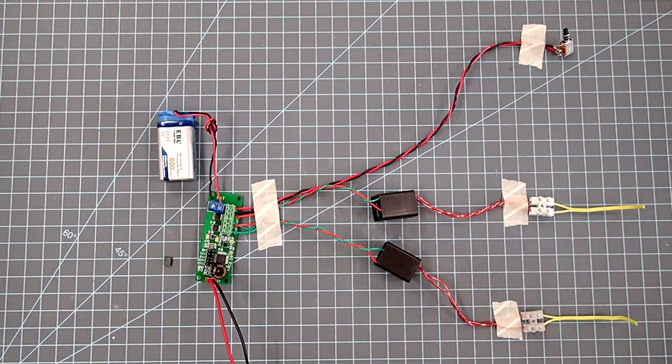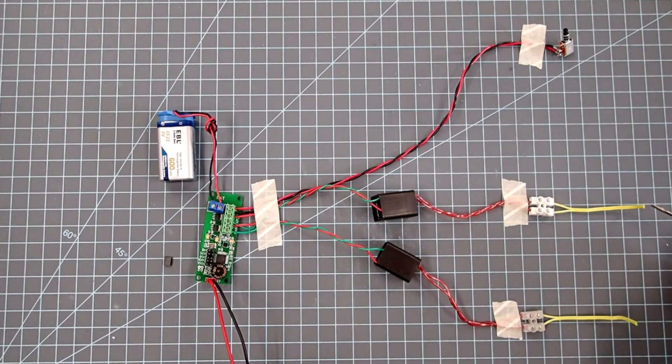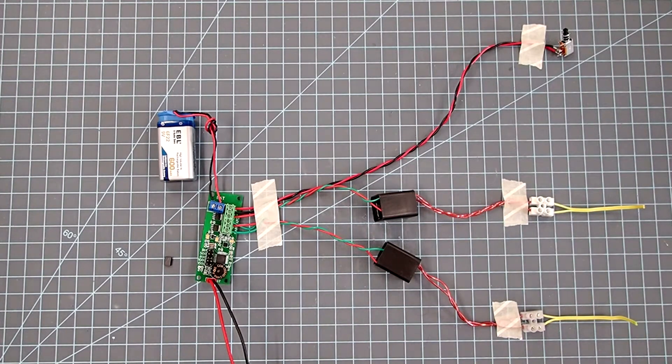Instead, this particular altimeter connects to two high-voltage transformers that then send a high-voltage current through these wires, which is supposed to arc across the cut wires here, and that's what ignites the ejection charges.